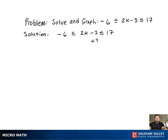Since the variable is only in the center expression, we're going to solve for k in that center expression, and then we'll be able to identify what values will satisfy the inequality. So just add 3, then divide by 2, then k is solved for, and the solution set will be clear.